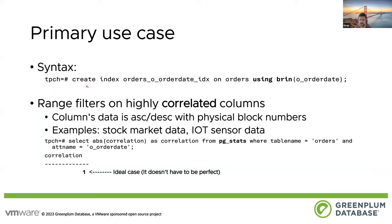This is the kind of syntax — it's very simple. Unlike B-tree indexes where you could just say 'on orders, order_date', you have to say 'using BRIN' because it's a non-default. Once you do that, you can create the index. It's very simple syntax.